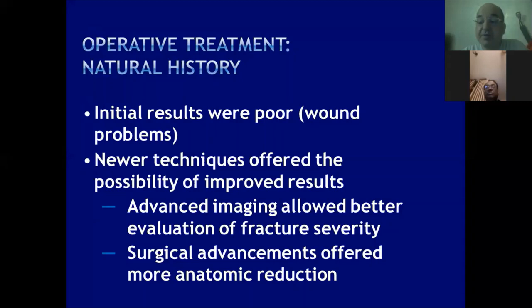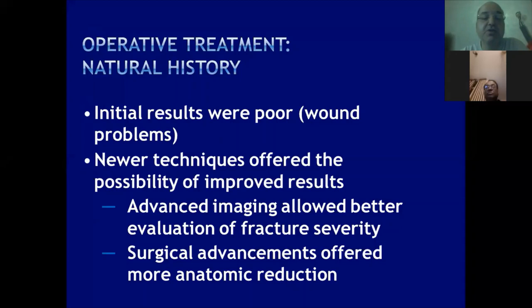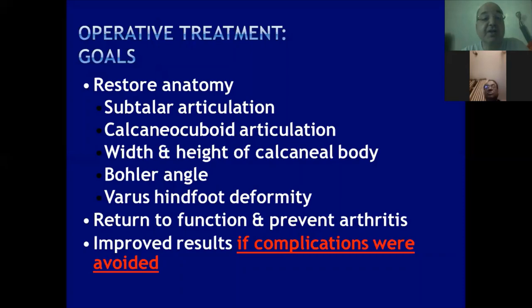To avoid the complications of conservative treatment — malunion and post-traumatic arthritis — operative treatment was proposed. However, problems with operative treatment relate to poor wound healing. The blood supply of the skin on the lateral heel is precarious — supplied by the lateral calcaneal artery, a branch of the peroneal artery — and poor surgical technique can lead to disastrous complications including amputation. The aims of surgical treatment are to restore the subtalar articulation, calcaneocuboid articulation, the three dimensions of the calcaneus, and hindfoot alignment, provided complications are avoided.